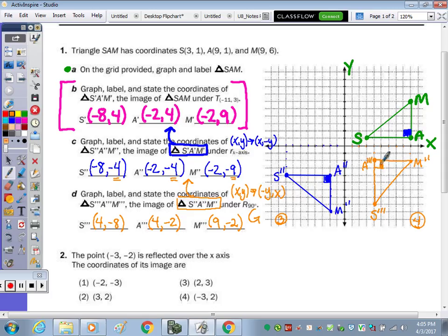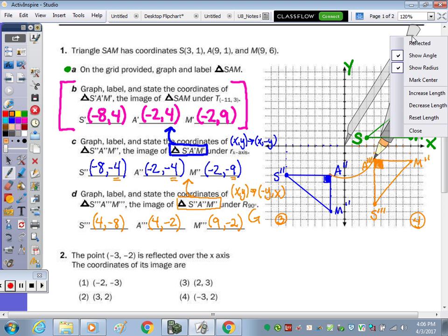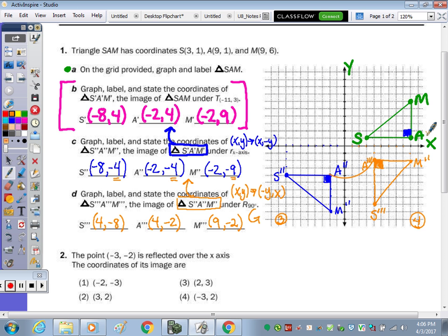Right angle's still at A. Remember, we said you can take your compass for any rotation. And if I put it right at the origin, as that's always going to be your point of rotation, and I put the compass on A, the pencil, we should be able to draw a circle and have it go right from A to A prime. And it does.